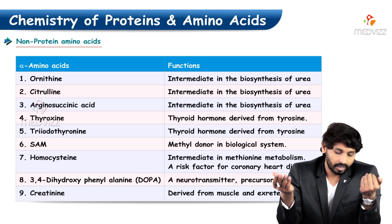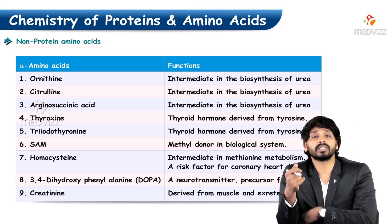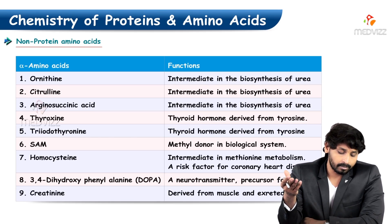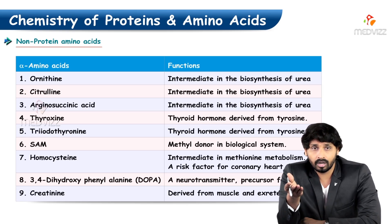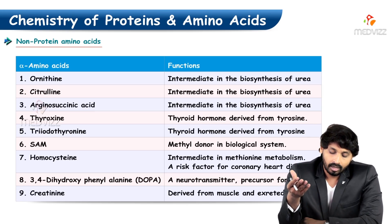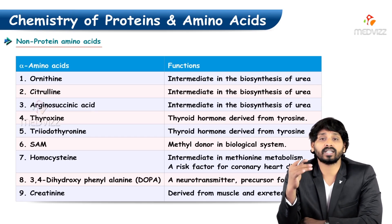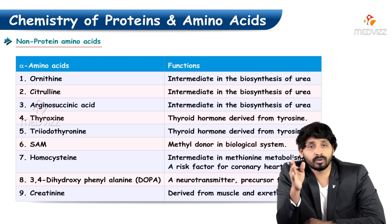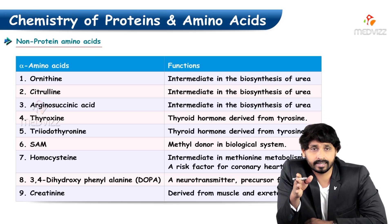Thyroxine and triiodothyronine can be seen in the synthesis of thyroid hormones. SAM, S-adenosylmethionine, acts as a methyl donor. Homocysteine is an intermediate in methionine metabolism and a risk factor for coronary heart disease. A lot of research has been done on homocysteine, which is the main culprit in causing coronary heart disease.